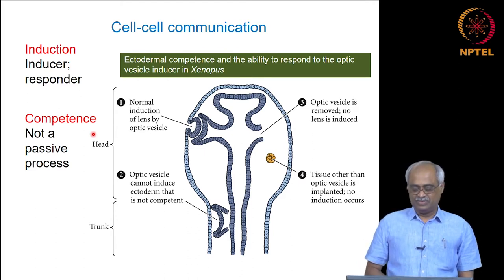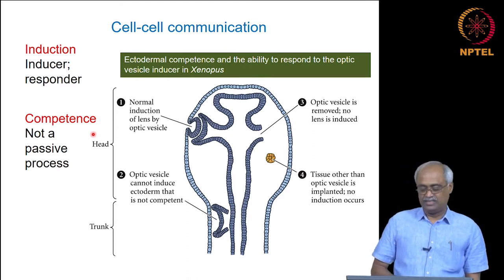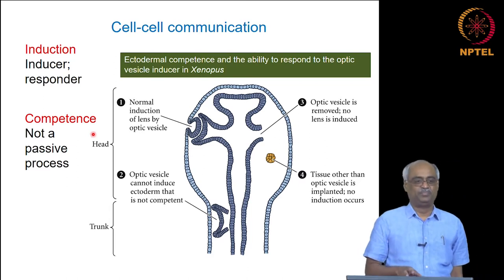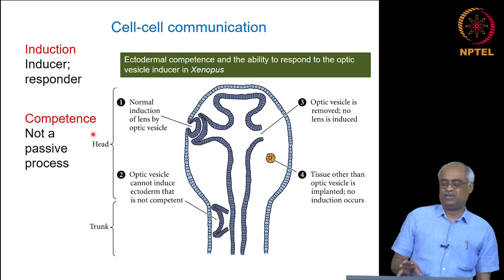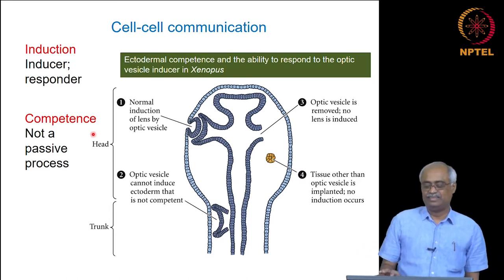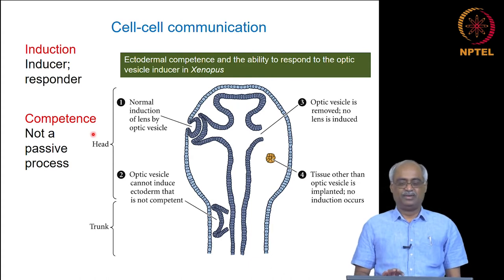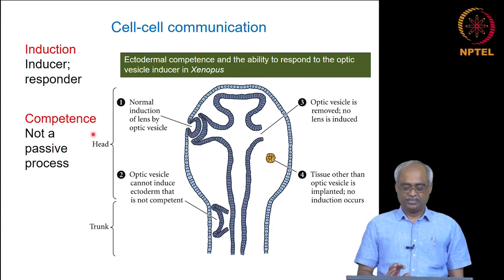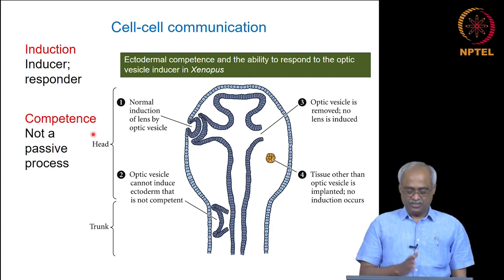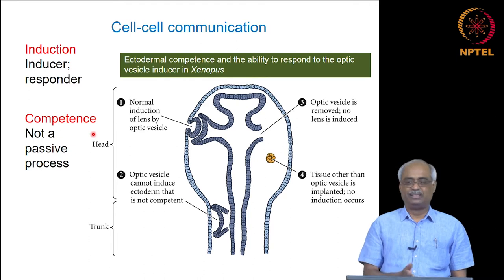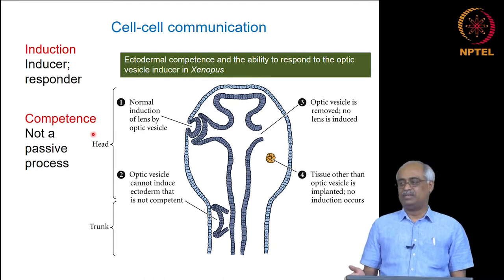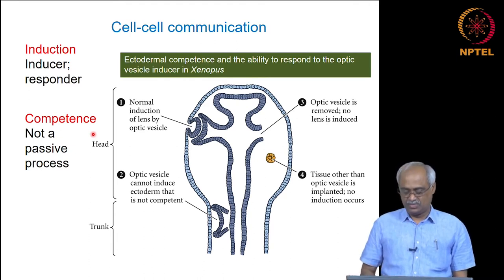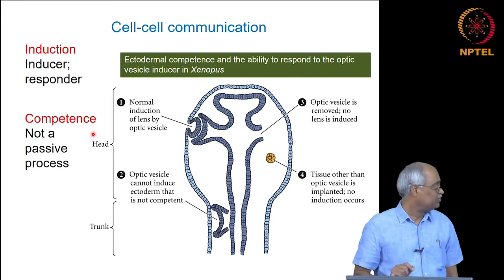We are going to learn this using eye development in vertebrates as the example. There are many steps we want to consider, and they are all present in that process — that is why it is used as an example in the book. These slides are directly from the book.